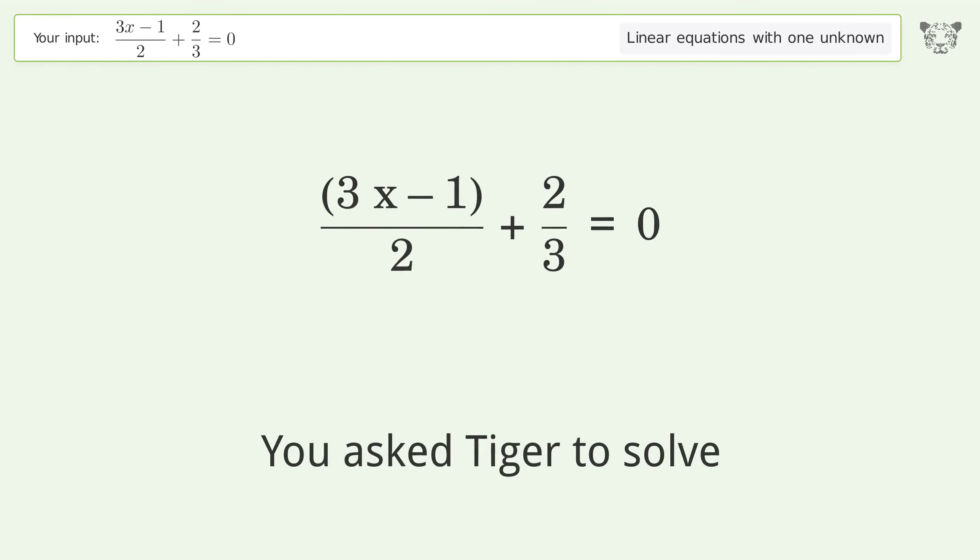You asked Tiger to solve this. This deals with linear equations with one unknown. The final result is x equals negative 1 over 9.